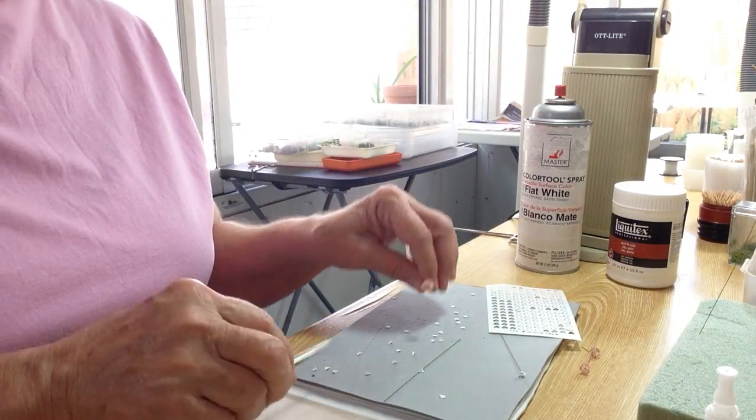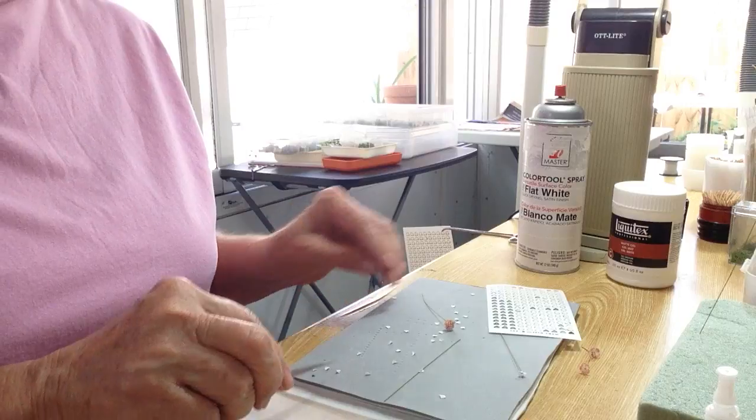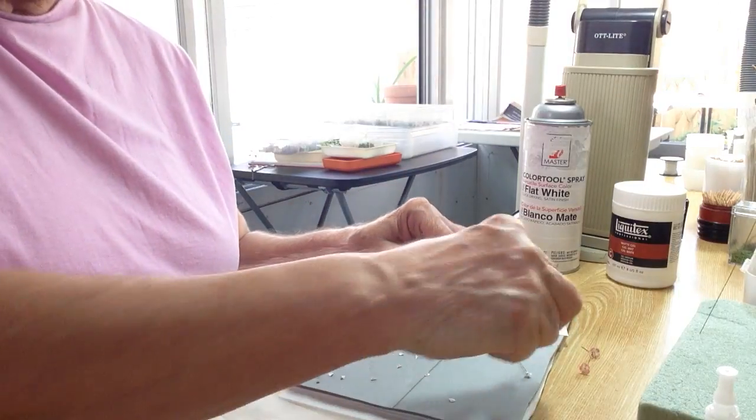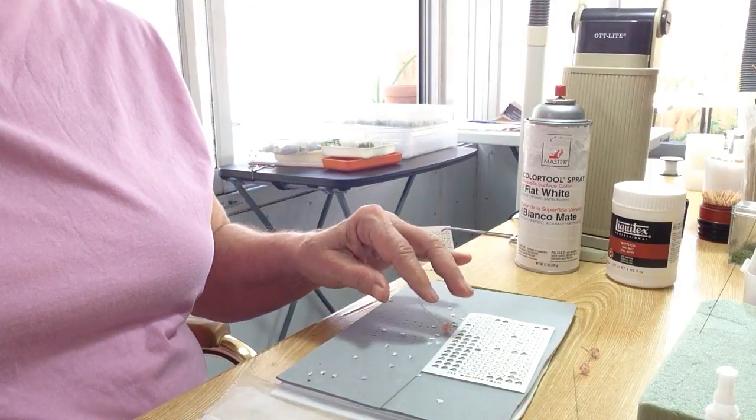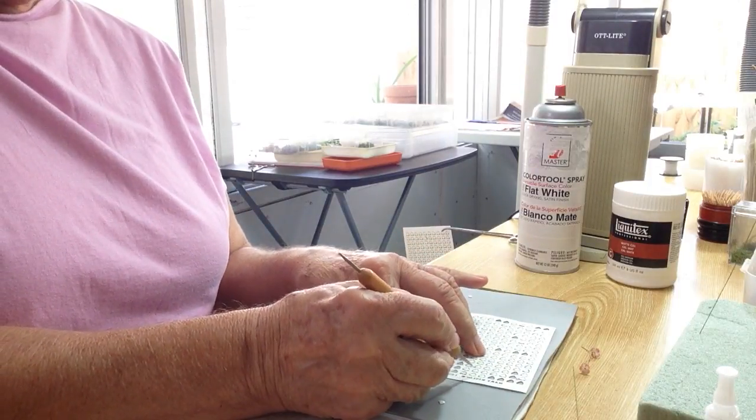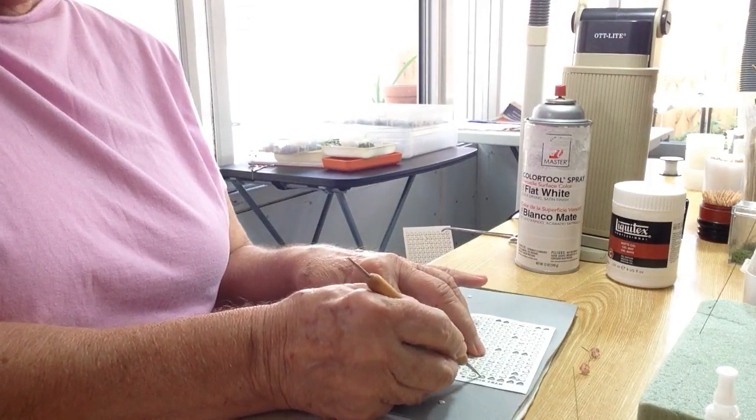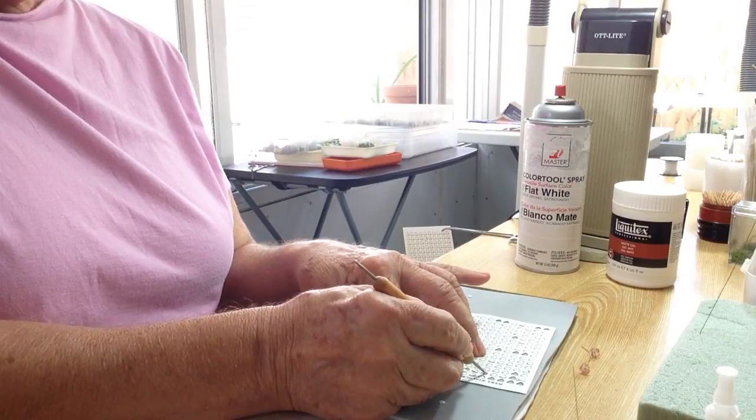Now, the next thing I'm going to do is I'm going to take the petals out of the sheet, and to do that you just touch the connection point and they just come right out.